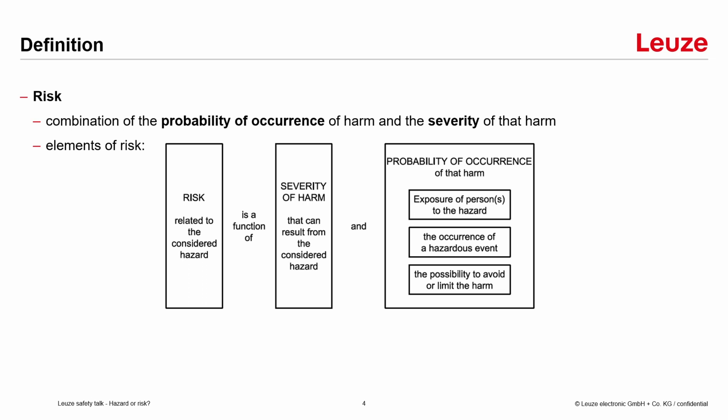The last point is the possibility to avoid or to limit the harm. Can the person see what is happening? Is it a very fast moving part of the machine or very slow moving — so can the person avoid this? And harm itself is a physical injury or damage to health.